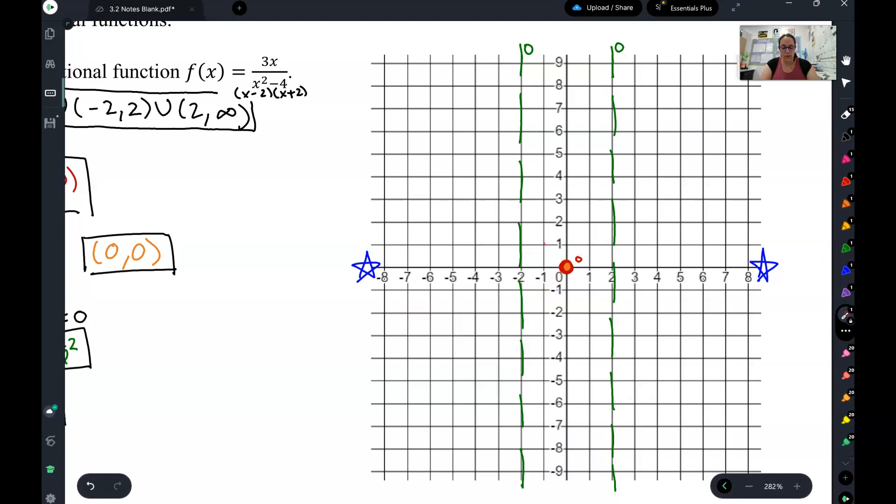Or am I going to cross through it like that? And I don't actually know. So this is a graph where we're going to need to find a starting point. So a good way to find a starting point is on this x-intercept that we're focusing on, we're going to pick a point on either side of the x-intercept, and just plug it into the equation and see what we get.